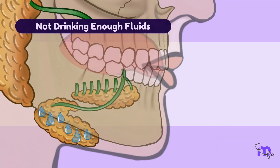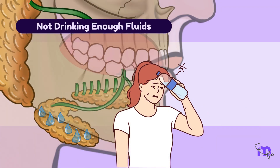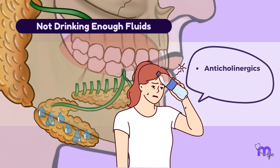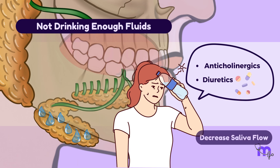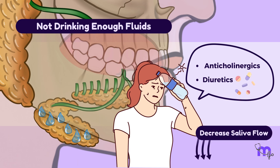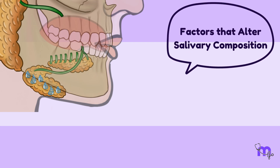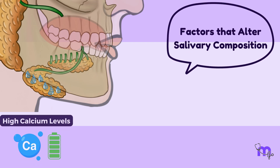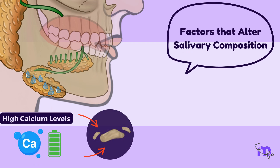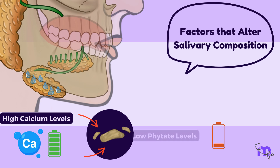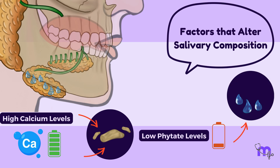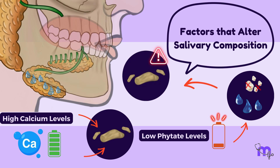Not drinking enough fluids can thicken saliva and slow down its flow. Certain medications like anticholinergics and diuretics can decrease saliva flow as a side effect. High calcium levels can form sialolith crystals more easily. Low phytate levels also increase risk, as phytate in saliva helps prevent the formation of hydroxyapatite crystals.